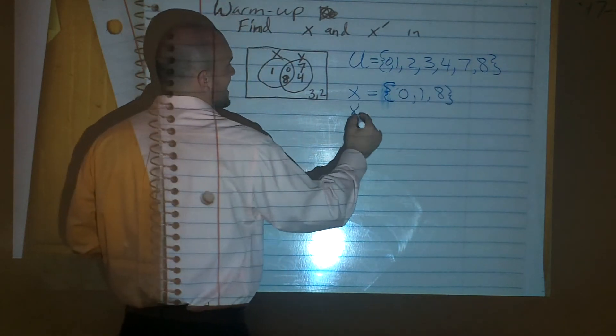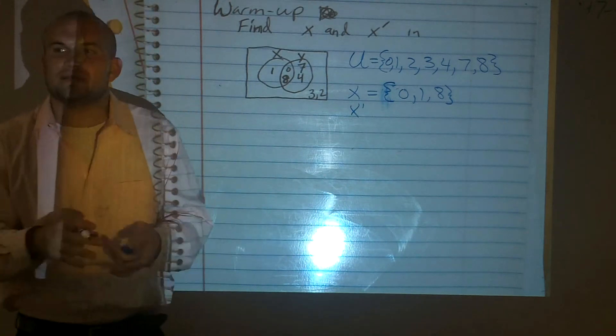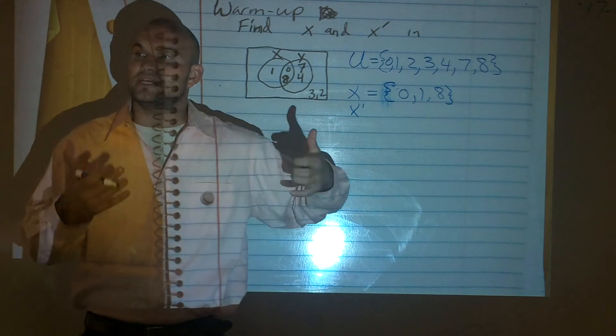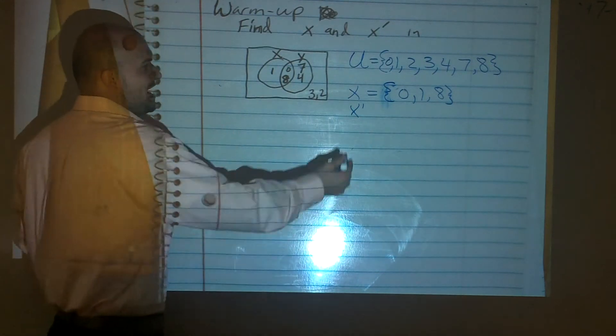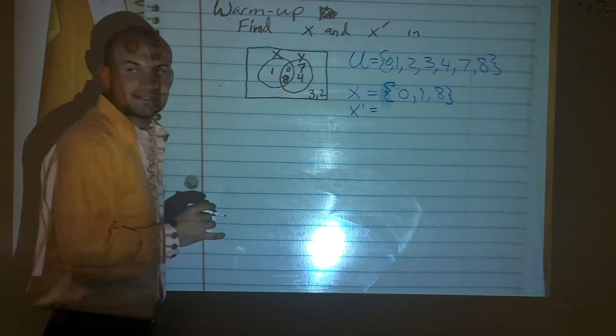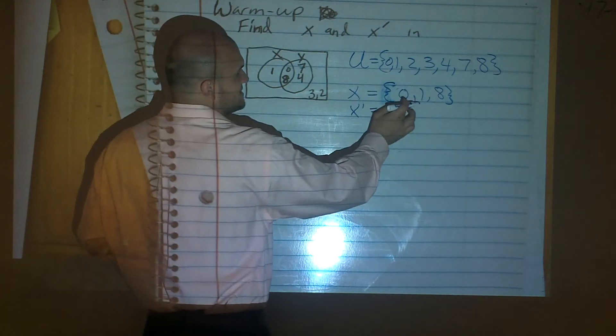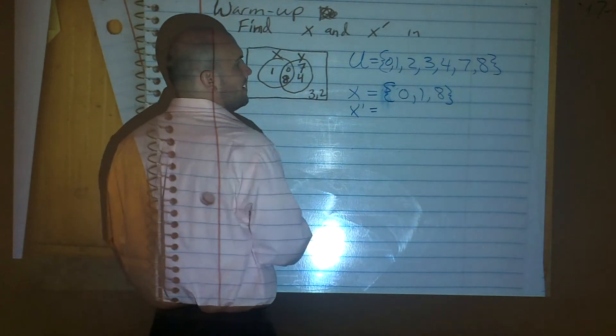Then it says, what does x complement mean? What does the x complement mean? Everything that's not going to be x, but that's still in your universal set. So it's everything that is not in my x, but that is still in my universal set. So therefore, it can't be 0, 1, or 8. So what is left over?